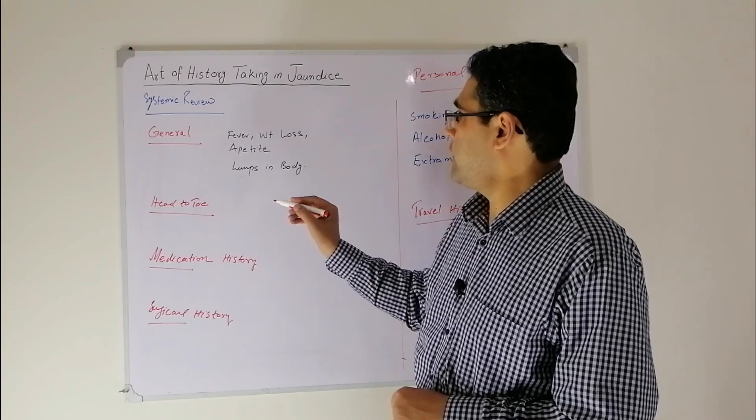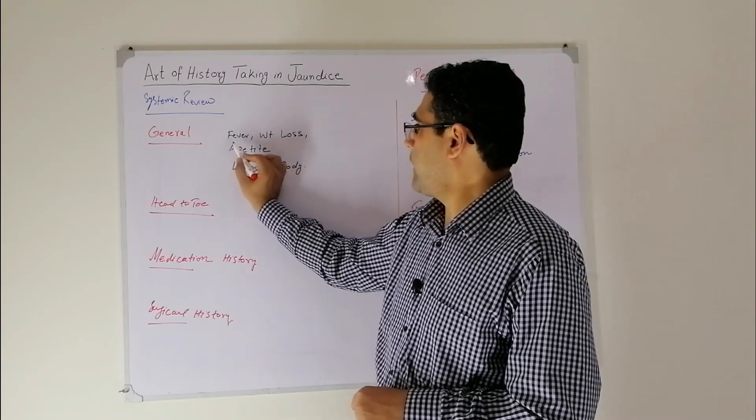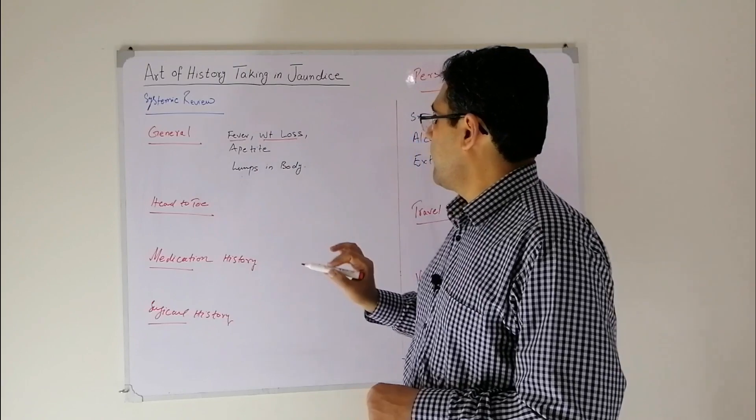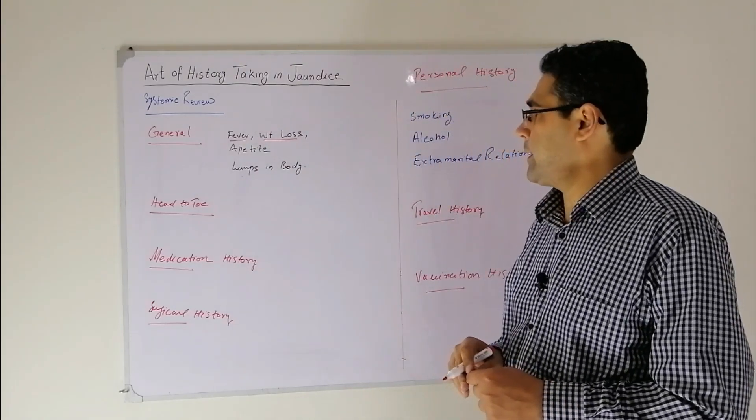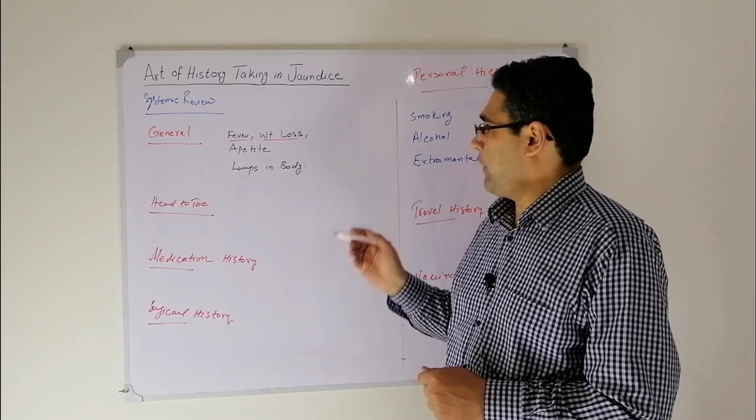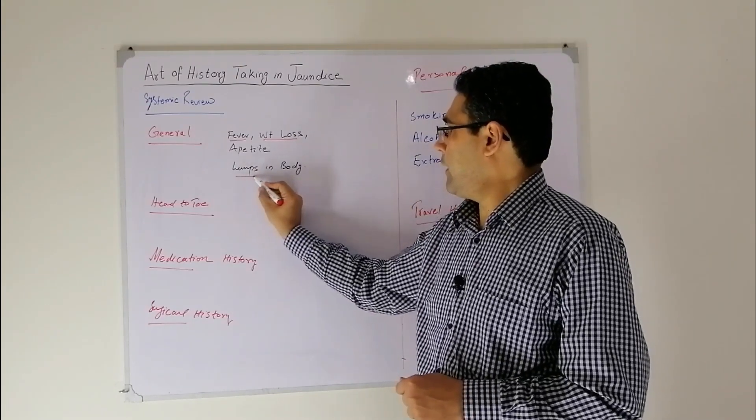The systemic review - you will start with general symptoms like fever, weight loss. By asking about weight loss, you will rule out malignancy and then ask about appetite and lumps in the body.